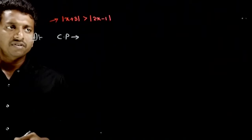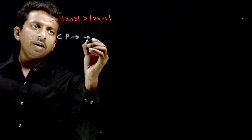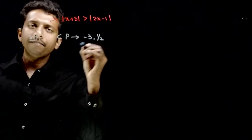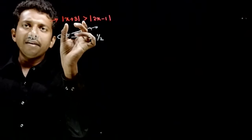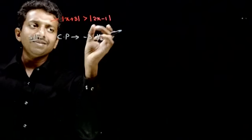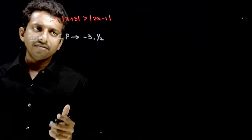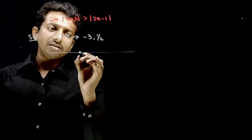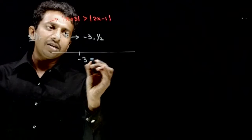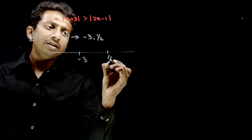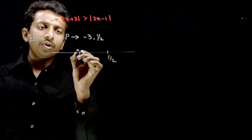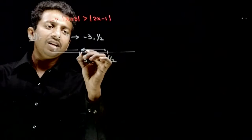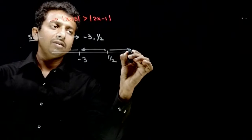First, let us find the critical points. We get minus 3 and half. So, the critical points are minus 3 and half.